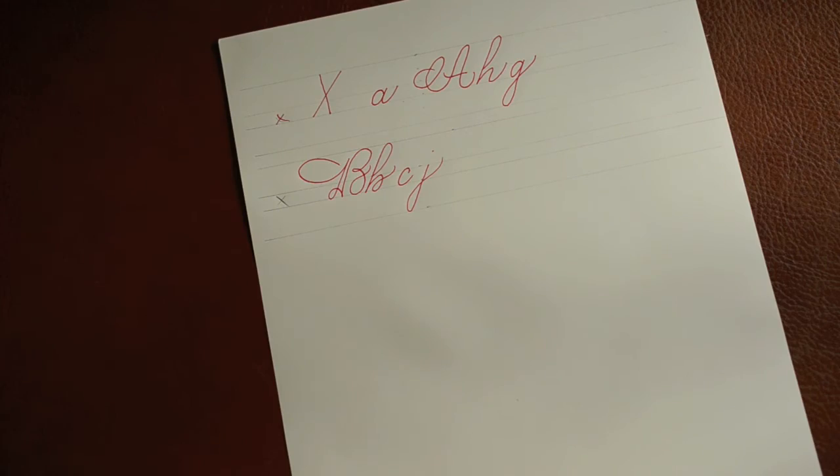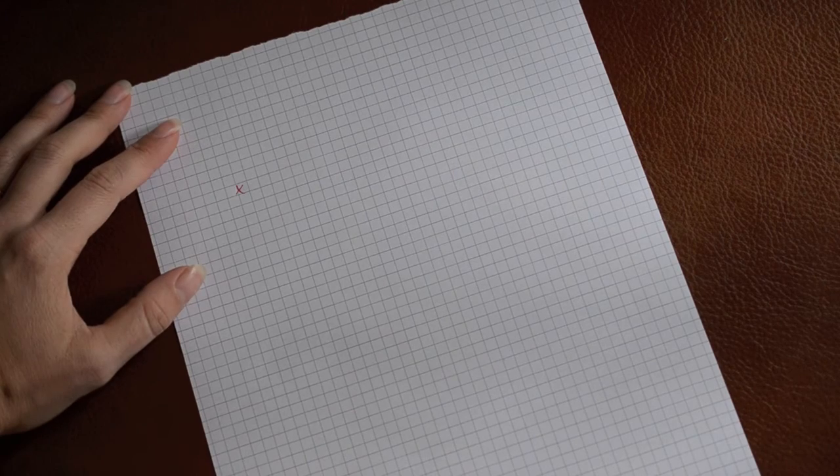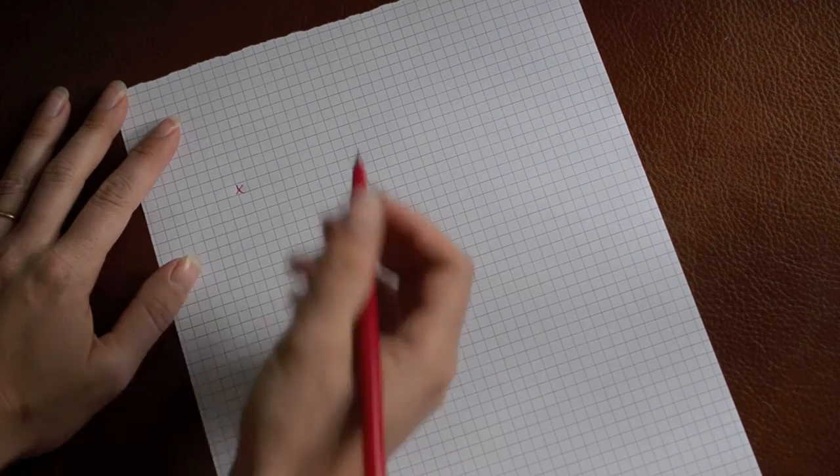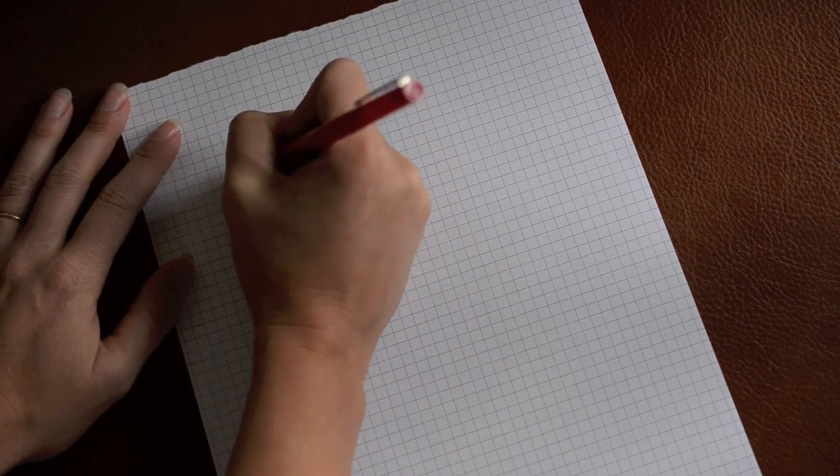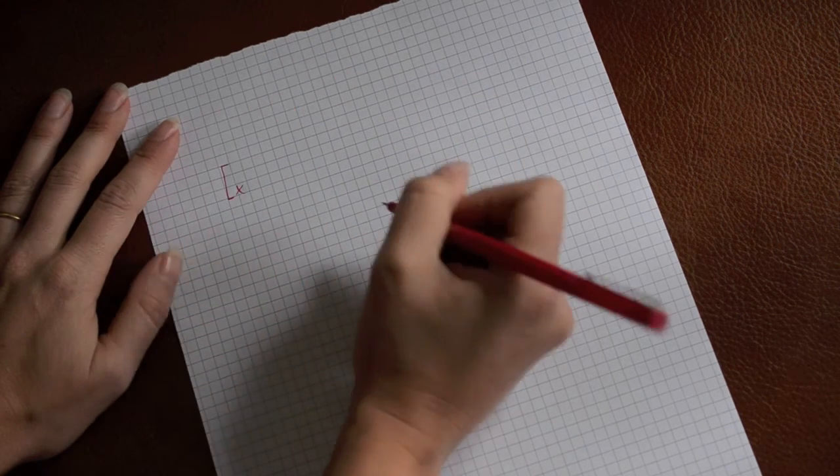The other thing you could do, if you're not gonna use blank paper, is use graph paper, which I use very often to practice. And the same rules will apply with this. You just don't have to draw lines. So you pick one grid high as your x-height, and then you go up two, so three total. And that will be your capital.